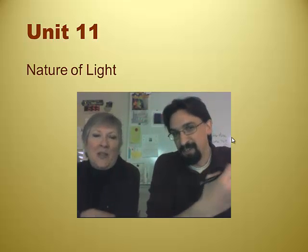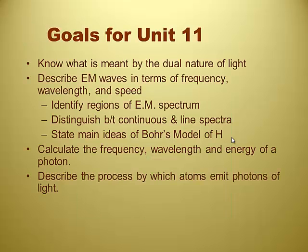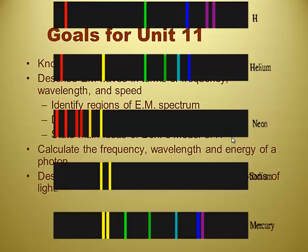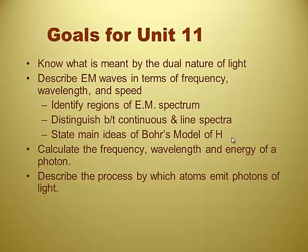We're going to be discussing the nature of light and why things give off light. You are going to be knowing what is meant by the dual nature of light. You are going to be able to describe the electromagnetic waves in terms of frequency, wavelength and speed. Identify regions of the electromagnetic spectrum. Distinguish between continuous and line spectra. State main ideas of the Bohr's model of the hydrogen atom. And you're going to be able to calculate the frequency, wavelength and energy of a photon of light. You're going to be able to describe the process by which atoms emit photons of light.